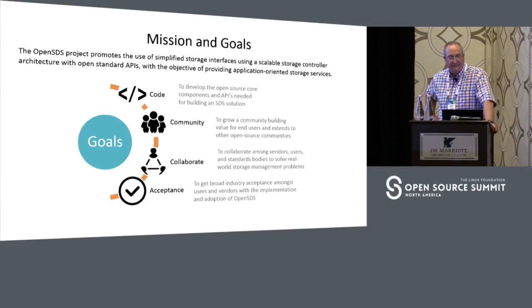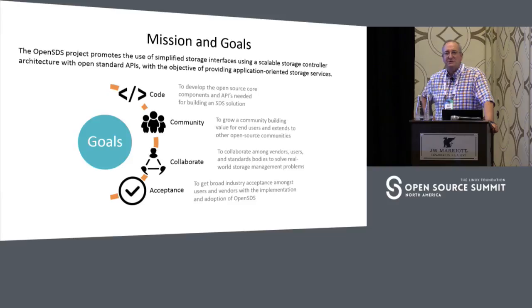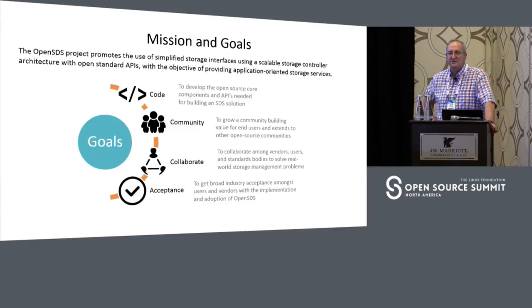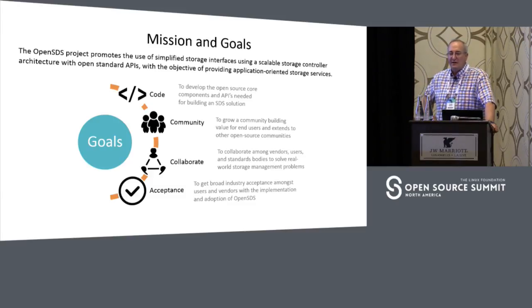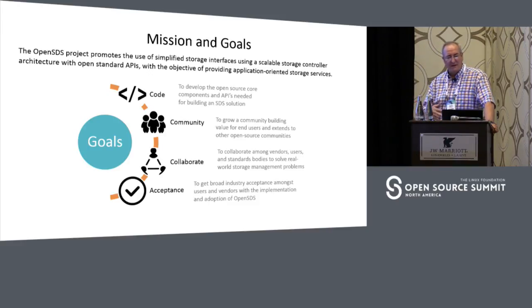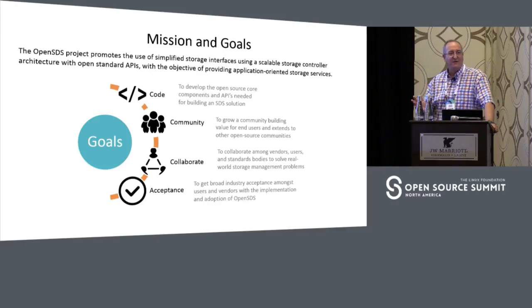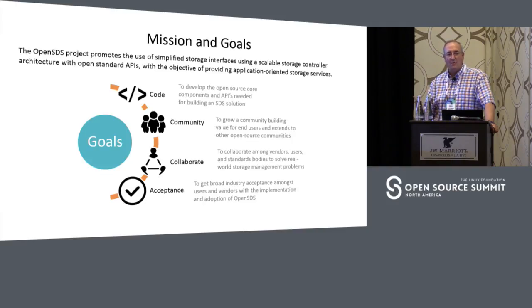The goals are to try to clean up the mess — make it easy for applications to consume storage, make it easy for administrative environments to regulate storage consumption through policies, so that applications end up connecting to the right kind of storage in a way that's understood. In order to do that in a way that gets accepted — this is not the first, second, or third time people have tried to clean up this mess — what we're trying to do differently this time is to be more community-oriented rather than vendor-oriented, which is what's happened in the past.